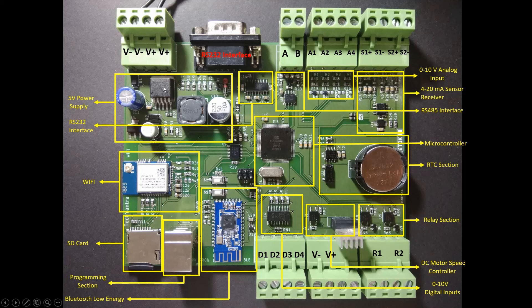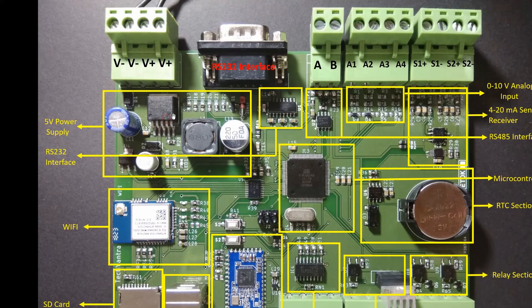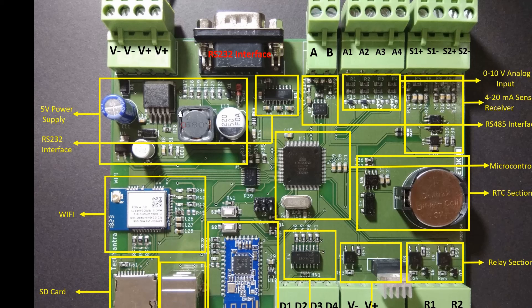Let's start with the power supply block. With the help of this block we are generating 5V and 3.3V, and we are going to use a 12V adapter to power our data logger. Here we are going to plug the terminals of the adapter, and this power supply block will generate 5V and 3.3V. We are generating these voltages with the help of an SMPS circuit and a linear regulator circuit, and we will see exactly how in its respective section.